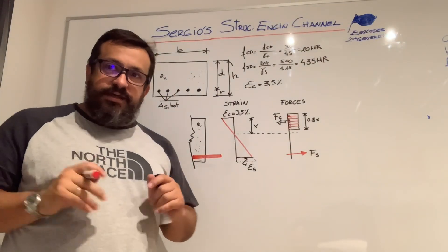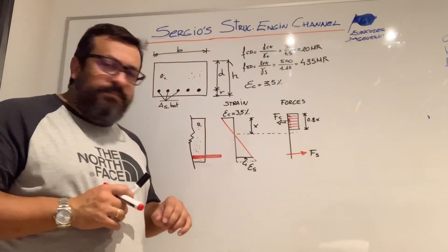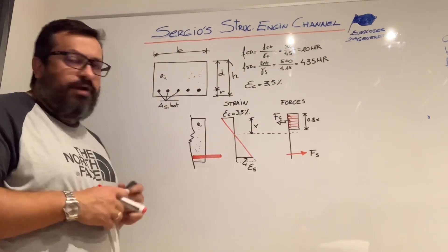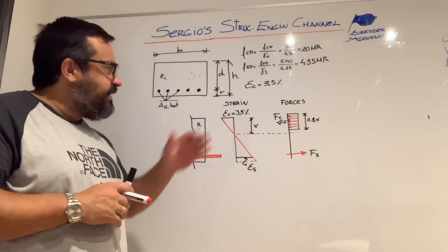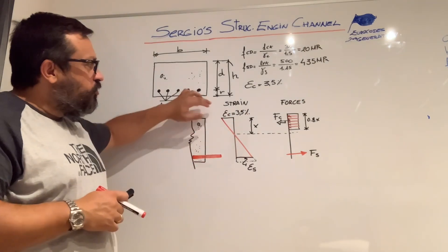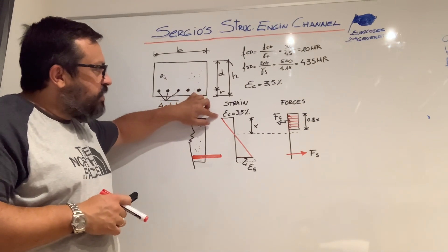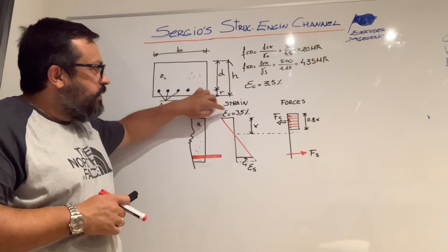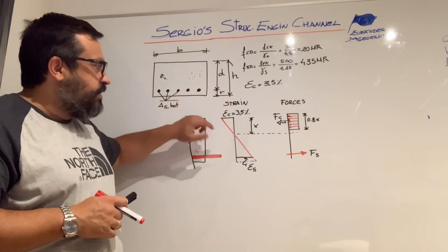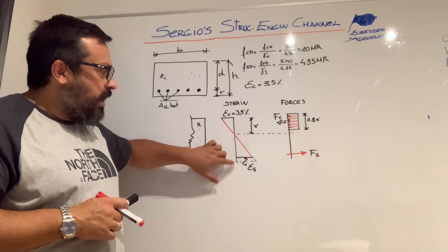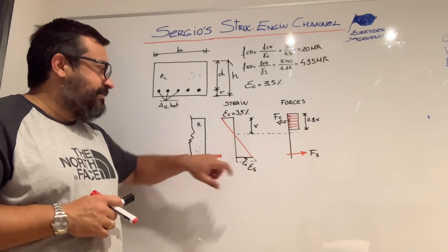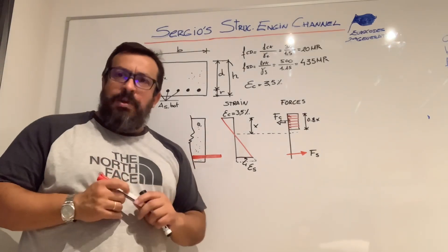The first step to get the bending moment is to establish the strain diagram. We are going to assume that the section remains plane after deformation. According to Eurocode, the strain of the concrete at the top fiber is 0.35%, and we are going to assume the deformation of the reinforcement, called epsilon x, is plastified.